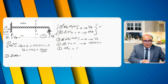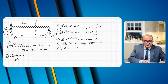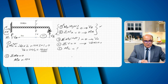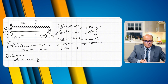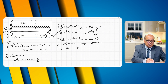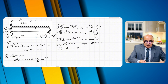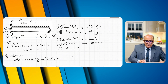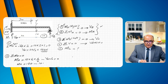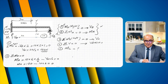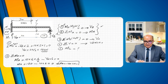Now summation of moments at A equals zero: MA clockwise plus 10 times 6 times 3 minus VB times 6 equals zero. Substituting VB equals 10: MA plus 180 minus 60 equals zero, giving MA equals minus 120 kilonewton meters — hogging.